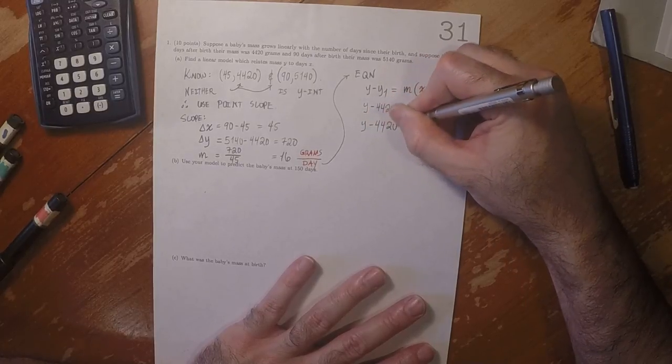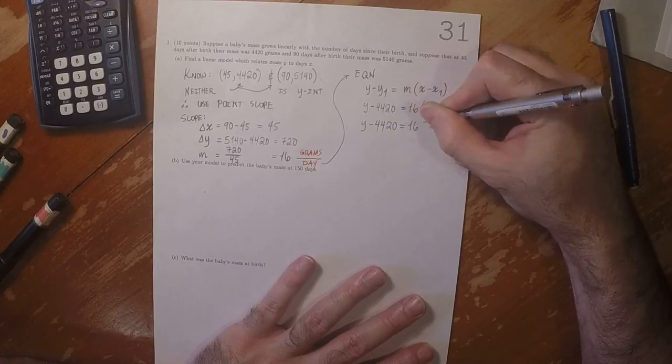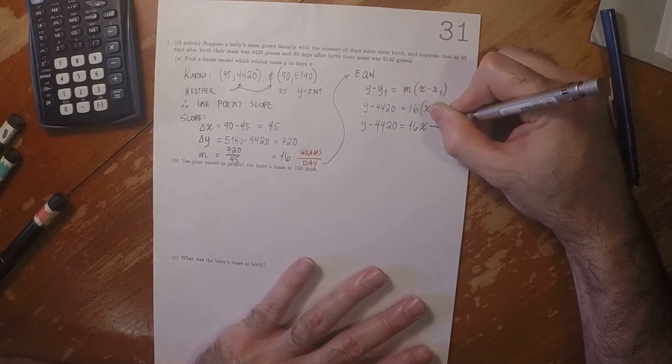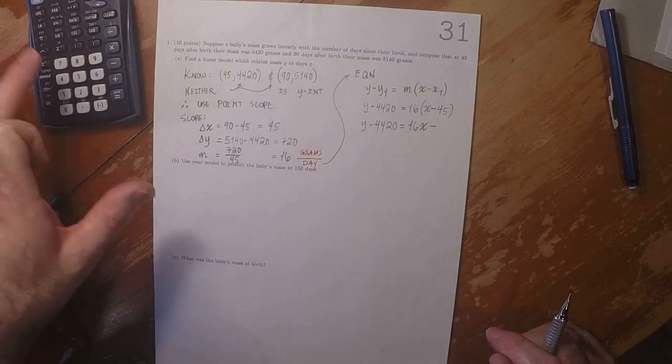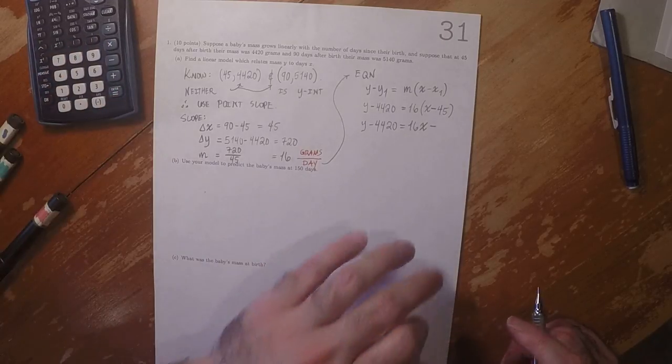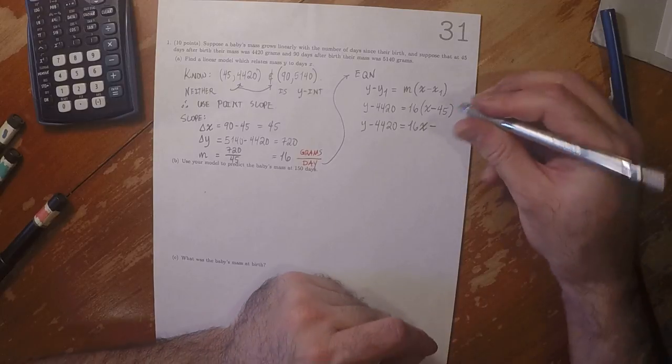So y minus 4420 is 16x minus, well, 16 times 45 is 720.